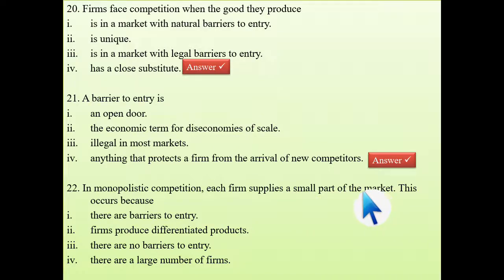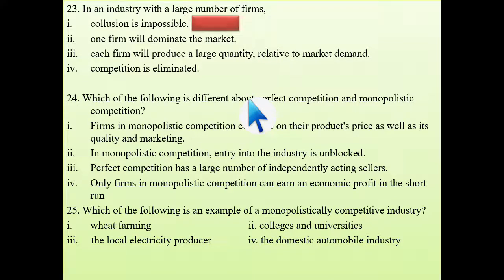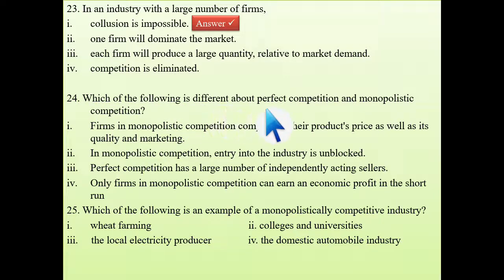Twenty-second question: in monopolistic competition, each firm supplies a small part of the market. This is because there are a large number of firms, so each firm can occupy only a very small portion of the market. Twenty-third question: in an industry with a large number of firms, collusion is impossible. Collusion is a unique feature of oligopoly, where there are few firms. You cannot have collusion among hundreds or thousands of firms.